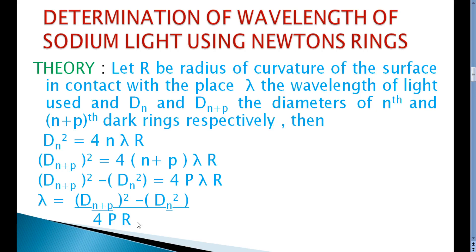The formula is: lambda is equal to (D²ₙ₊ₚ minus D²ₙ) divided by (4pR), where capital R is the radius of curvature of the lens used, lambda is the wavelength of light used, and Dₙ and Dₙ₊ₚ are the diameters of the nth and (n+p)th dark rings respectively. For example, n and n+p may be the 10th and 12th rings, so Dₙ is the diameter of the 10th ring and Dₙ₊ₚ is the diameter of the 12th ring.